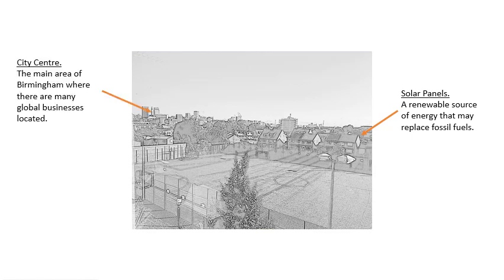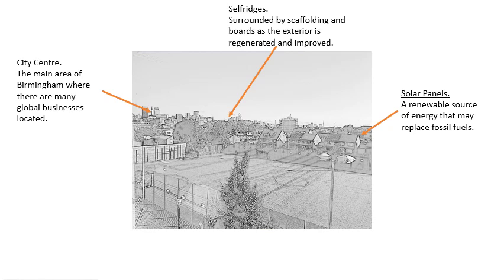On the left-hand side of the picture we've got the city centre — the main area of Birmingham where there are many global businesses. An example is HSBC: the bank now has its headquarters in Birmingham, which means all of its global operations are controlled from there, making Birmingham a really important and international city. In the middle background, we can just make out Selfridges, which is currently surrounded by scaffolding and boards because of regeneration and improvements happening to that building.